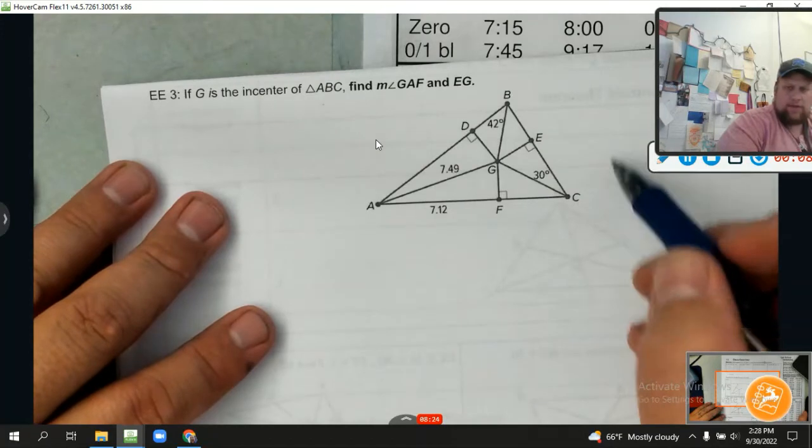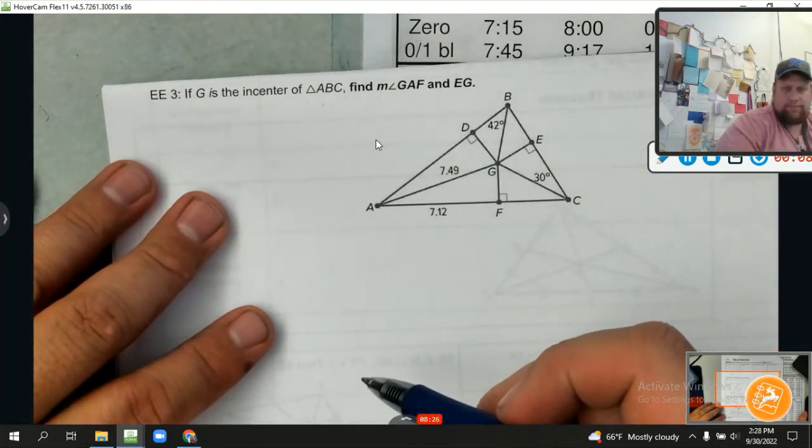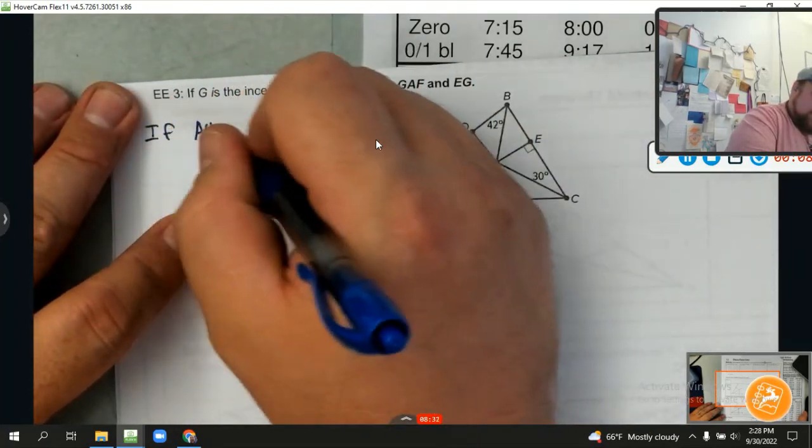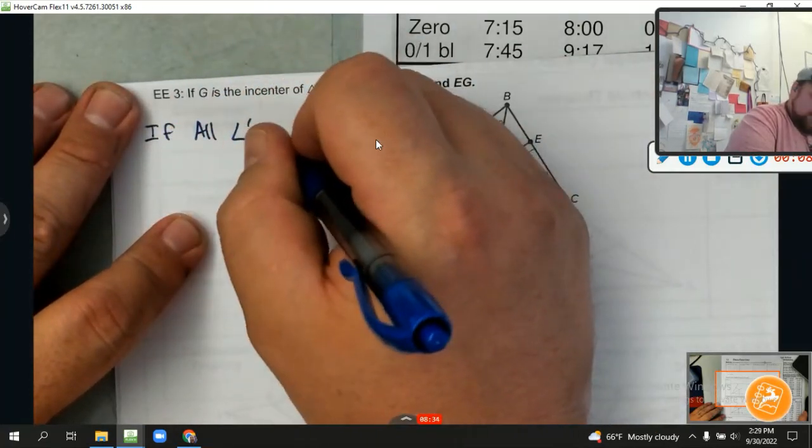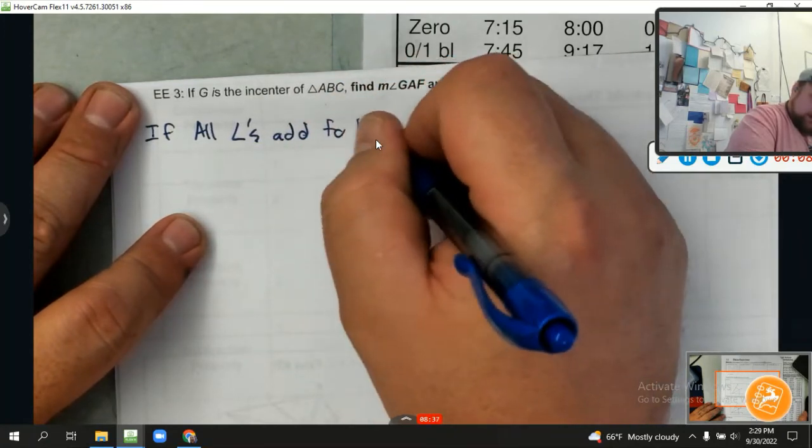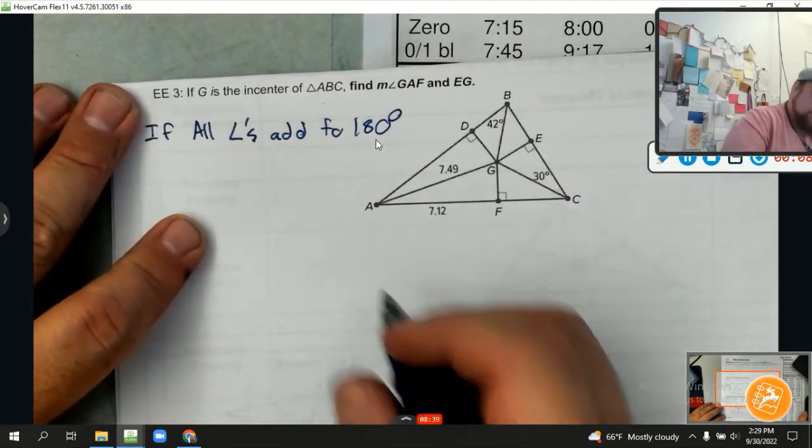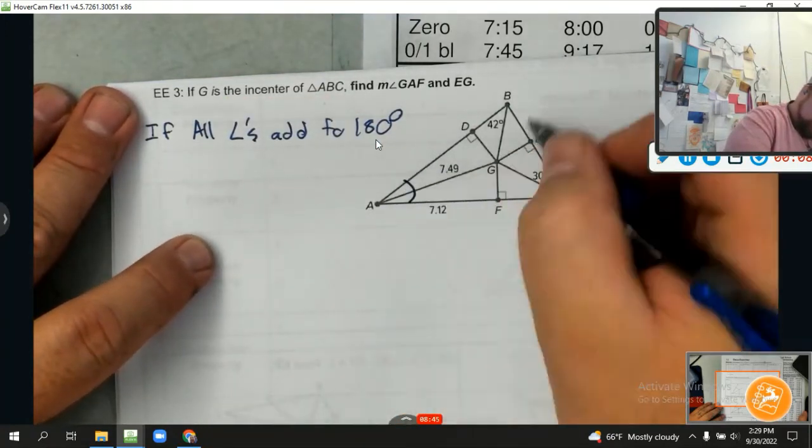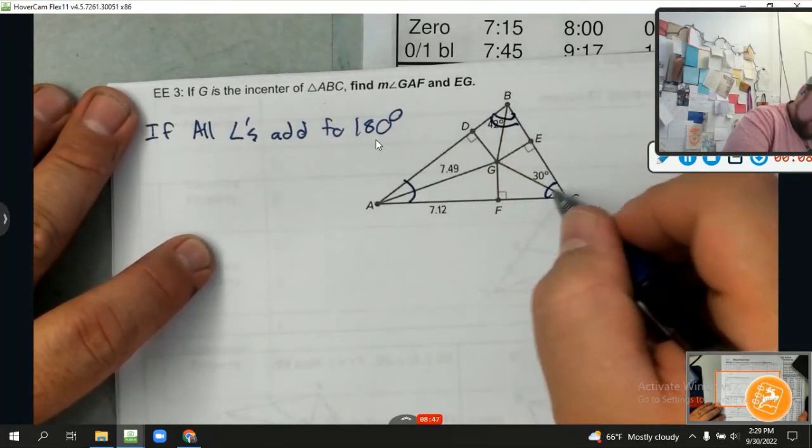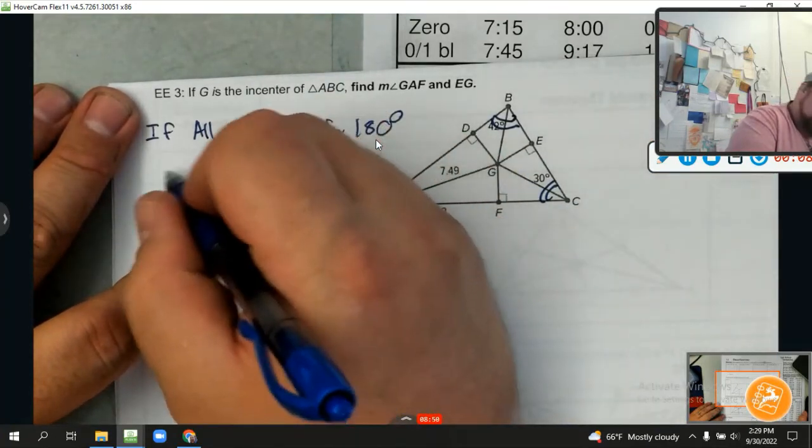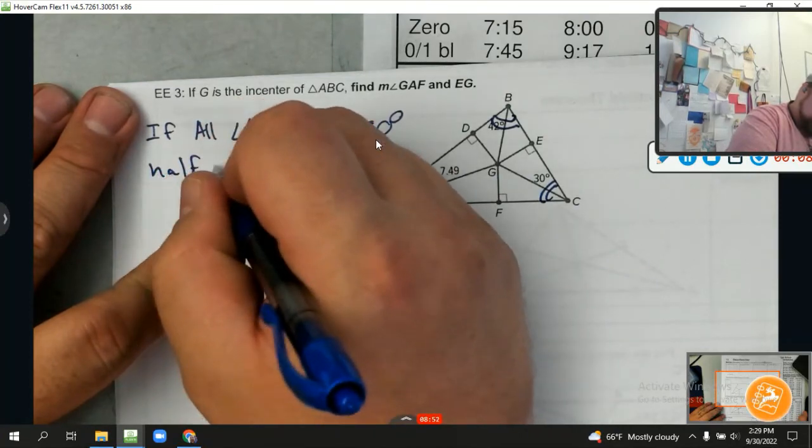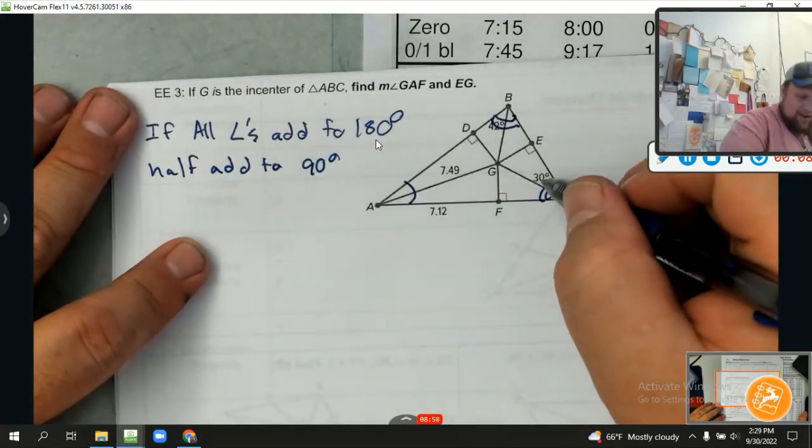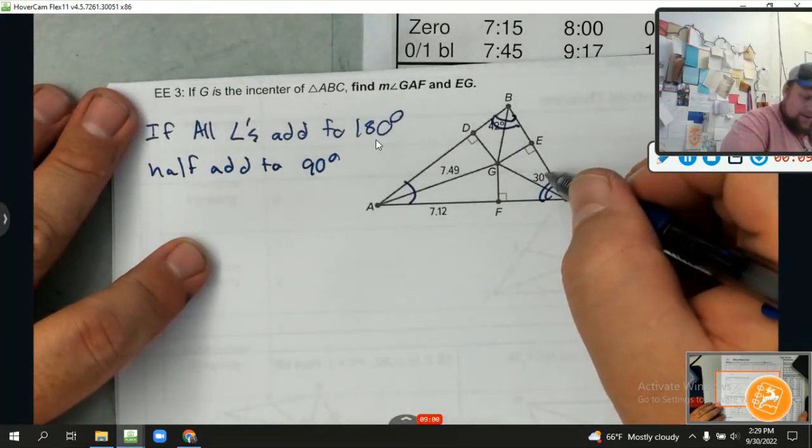Okay, so there we go. What do all the angles of a triangle add up to? Can we agree that if all the angles add to 180 in a triangle, what would half the angles add to? If the whole angles add to 180, angle 1 plus angle 2 plus angle 3 all add to 180, what do half the angles add to?